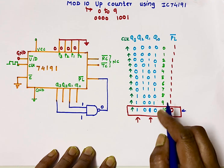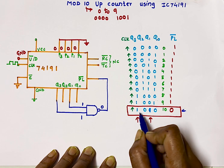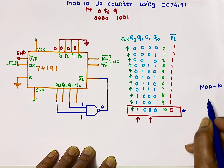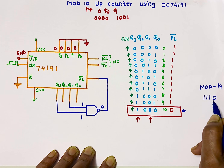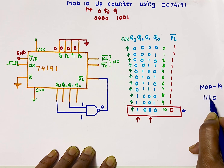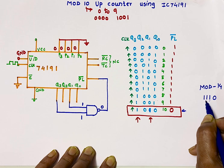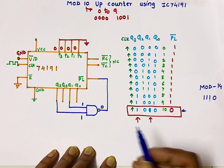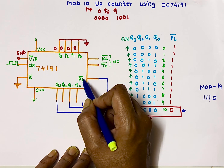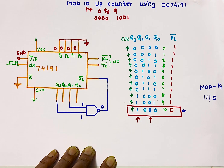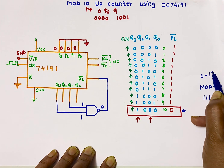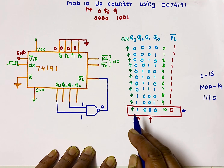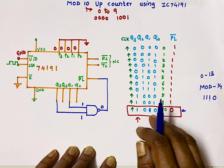You can generalize this method for any modulus. For example, for mod 14, the binary equivalent of 14 is 1110. So connect Q1, Q2 and Q3 to the inputs of the NAND gate. When all three become 1, the NAND gate output becomes 0, PL bar loads data parallelly, and the counter resets. Mod 14 means you get normal numbers from 0 to 13, and for 14 it shows 0 instead.